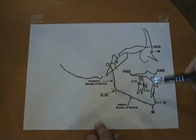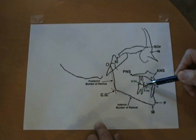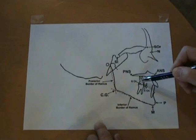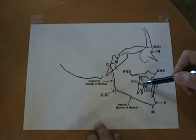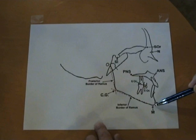You need to get pogonion, menton, the mid occlusal point of the second bicuspid or deciduous molar. And sixer, this is the sixer molar. We need to get the mid occlusal point to get the occlusal plane. Lateral border of the ramus and the inferior border of the ramus.